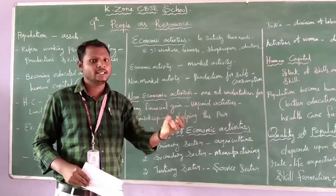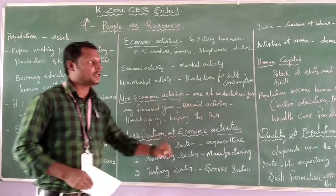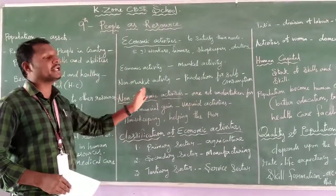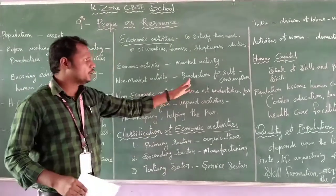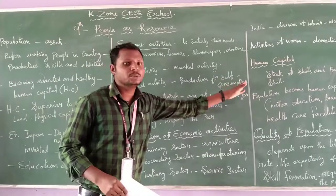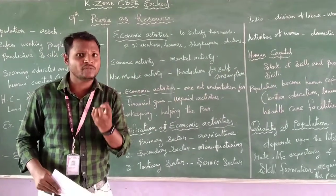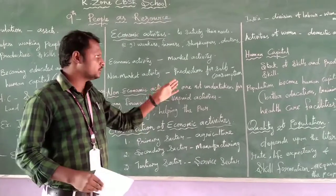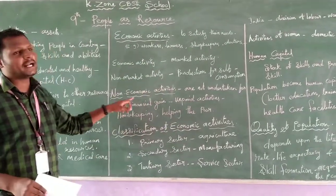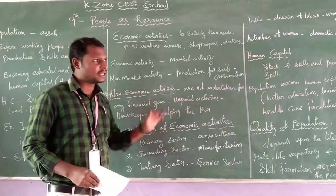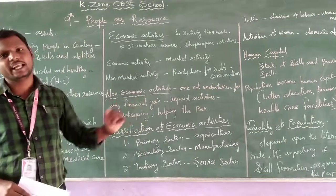There is another thing called non-market activity. Non-market activity involves production for self-consumption — they produce for their own use. And non-economic activities are those not undertaken for any financial gain.